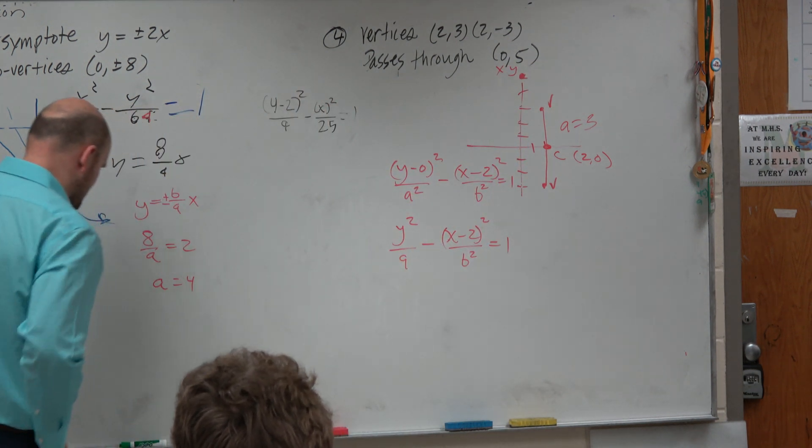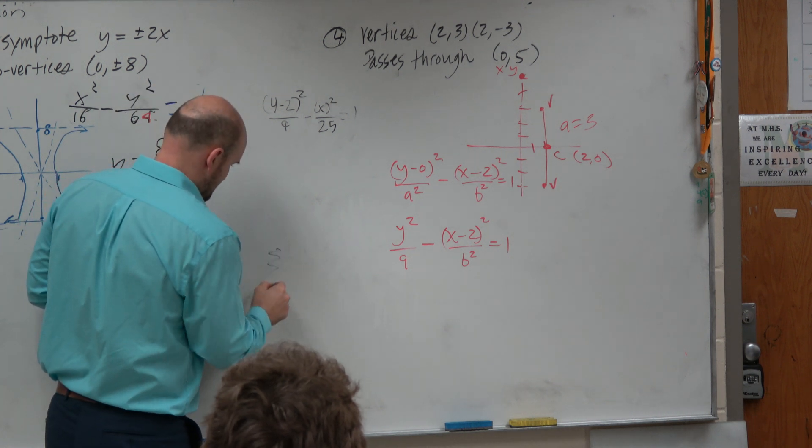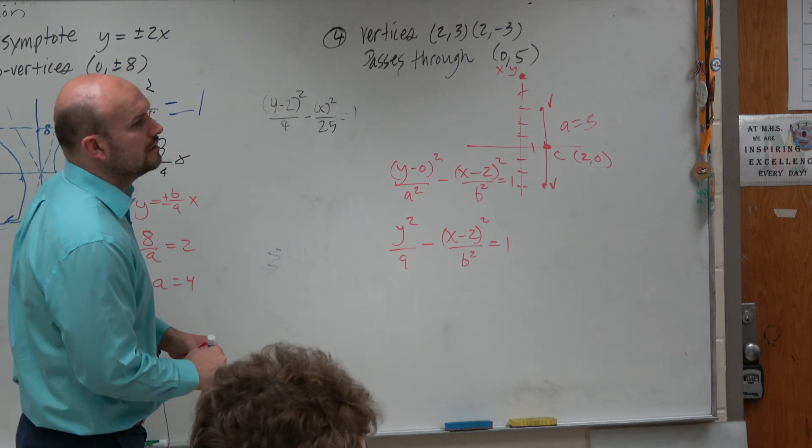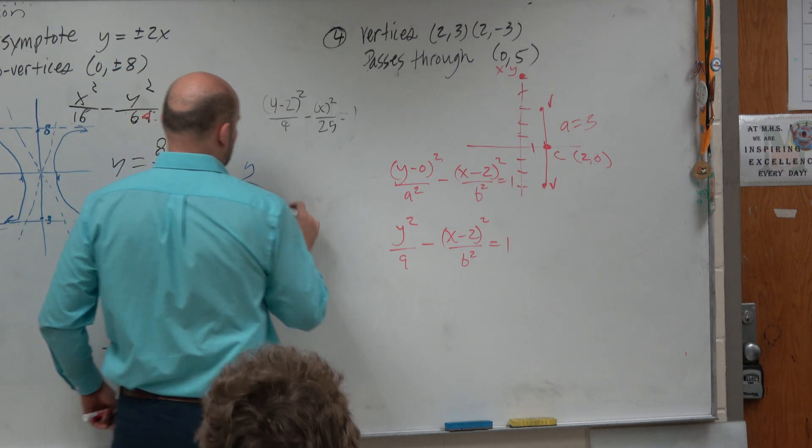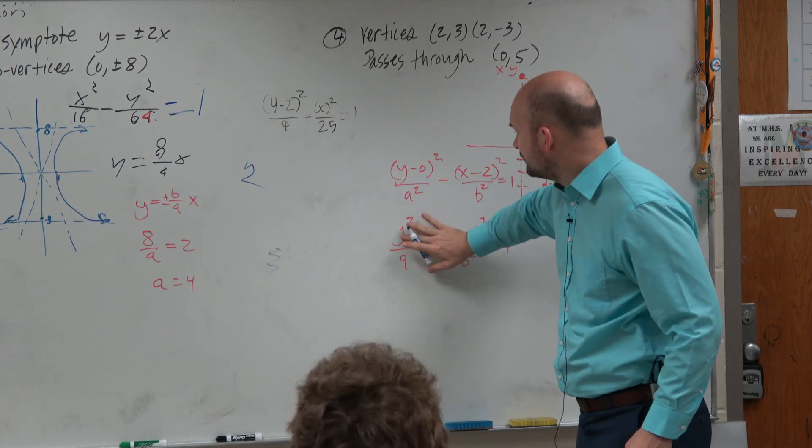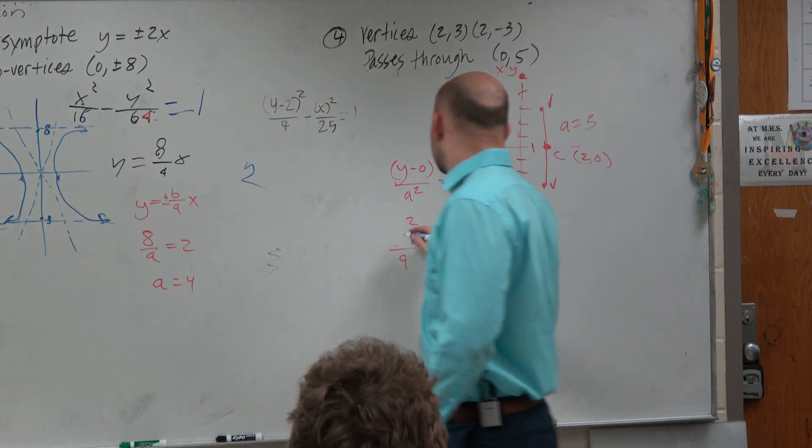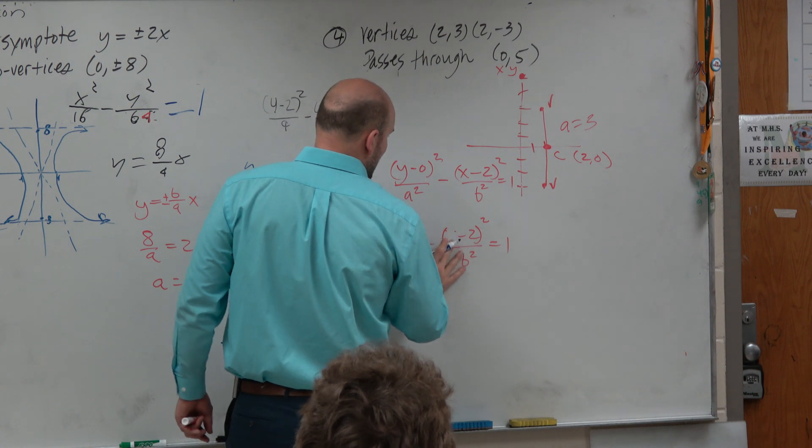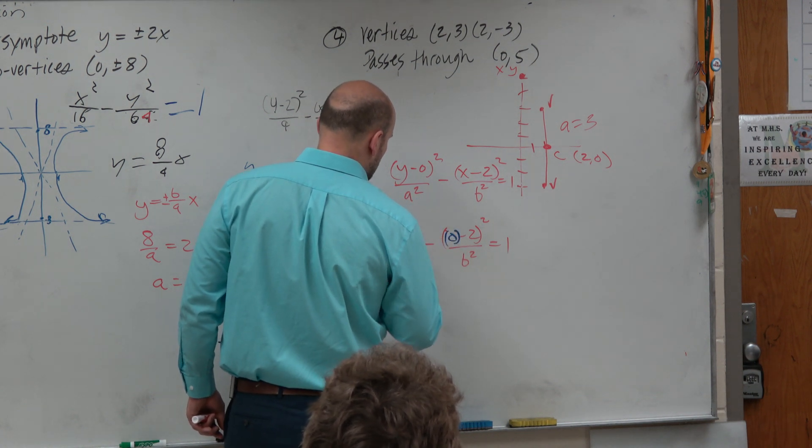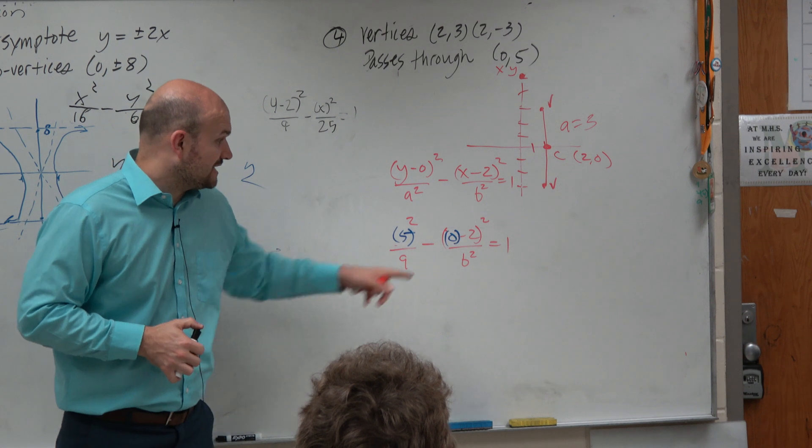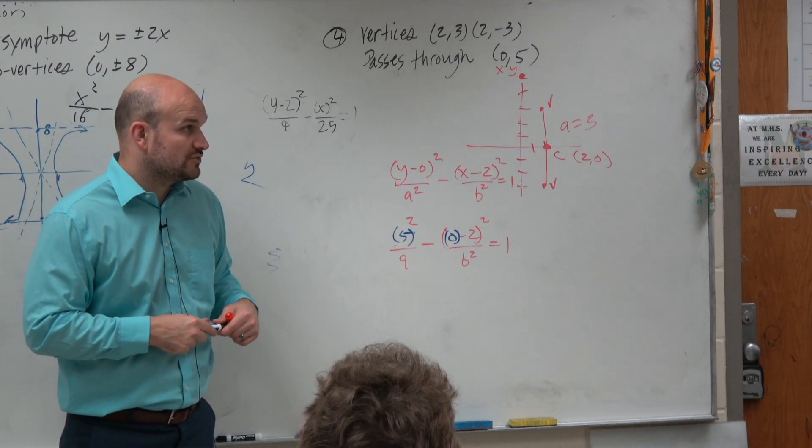So therefore, we can replace color. Oh, this is the bad blue. Ah, see that? We can replace the y with a 5 and the x with a 0. Now, let's mathematically go ahead and solve for b squared.